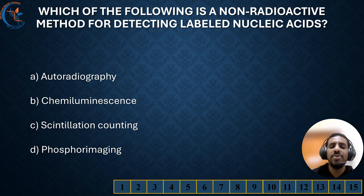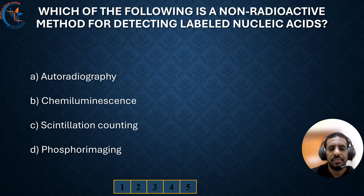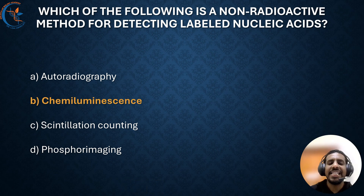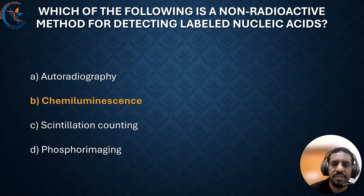Which of the following is a non-radioactive method for detecting labeled nucleic acids? The correct answer is chemiluminescence. Chemiluminescence is a non-radioactive detection method that uses chemical reactions to produce light, which can be detected and measured.